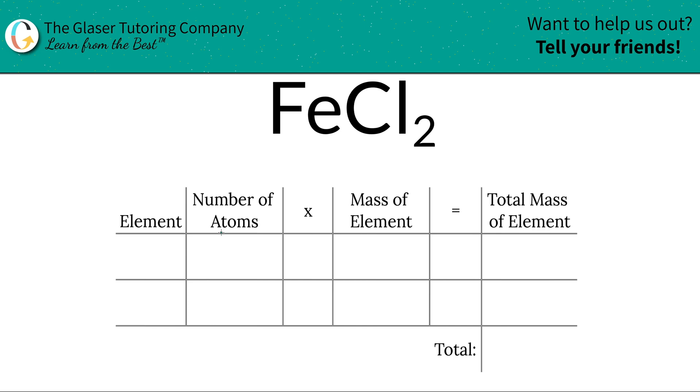So the first thing we're going to do is write down the elements that we see in the compound. We see iron Fe and we see chlorine Cl.